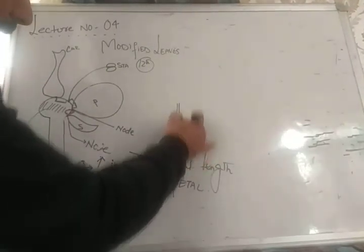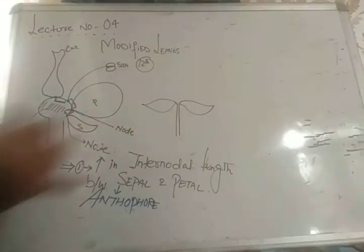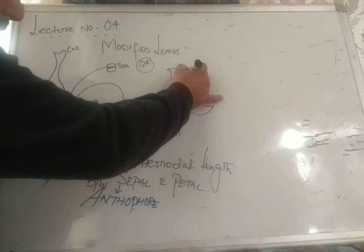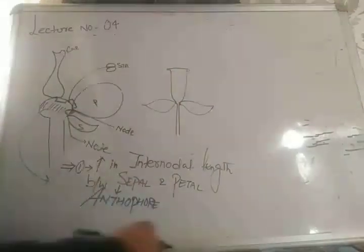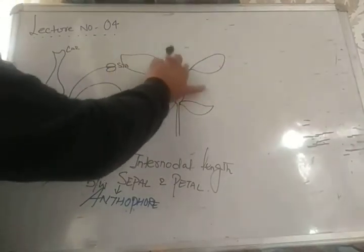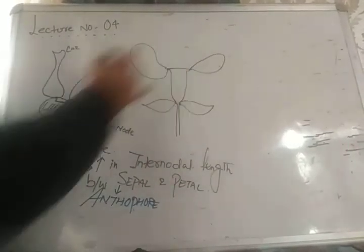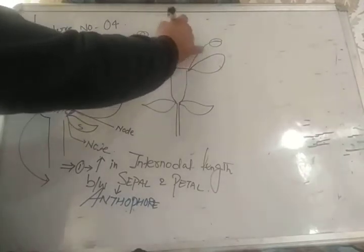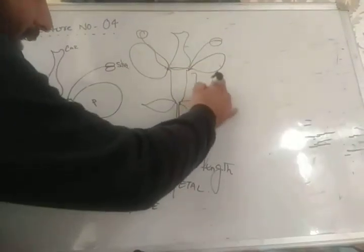For example, the stock of the flower is here and this is our sepal. There is an increase in the internodal length between sepal and petal — this elongated thalamus portion between sepal and petal. On this level is our petal, which is a brightly colored structure. On this level is our stamen. On this level is our carpel. In this condition the flower is called anthophore.